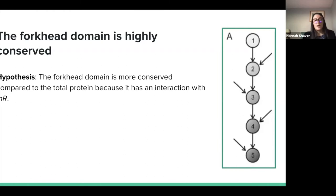Revisiting our hypothesis, we're predicting that the forkhead domain is more conserved than the total protein due to the interaction it has with INR. As a reminder, previous data shows that the insulin pathway follows Model A, where genes further down like FOXO are highly conserved.